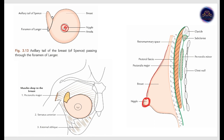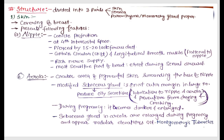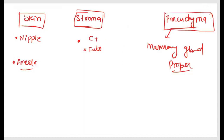The nipple is a conical projection located at the fourth intercostal space. The nipple contains 15 to 16 lactiferous ducts. It also contains circular and longitudinal smooth muscles.